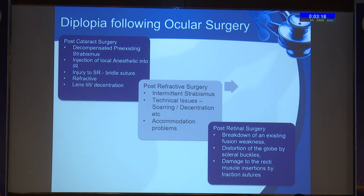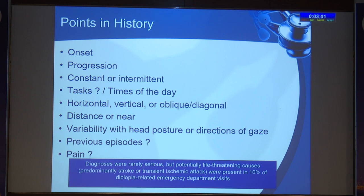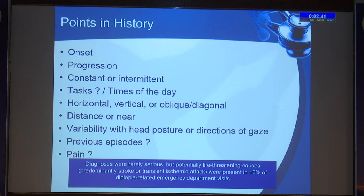Post-refractive surgery can cause problems with binocular vision anomalies, accommodation issues, and technical issues in the surgery. Post-retinal surgery, various reasons for diplopia include scleral buckles, damage to recti by traction sutures, and breakdown of pre-existing fusion. Retinal diplopia due to macular drag is very difficult to treat. Key points in history: onset, progression, whether constant or intermittent, at what time of day, whether horizontal, vertical, oblique or diagonal, distance or near, variability with head posture or gaze, any previous episodes, and whether associated with pain. Diplopia can very rarely be due to potentially life-threatening causes — one study showed around 16% of diplopia-related emergency department visits required ruling out rare causes.